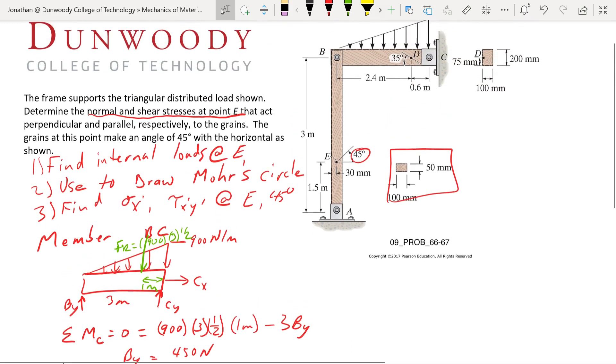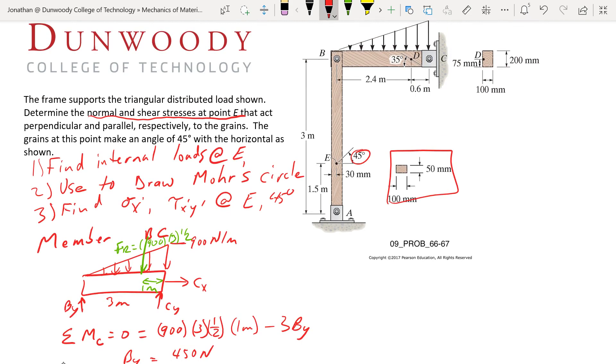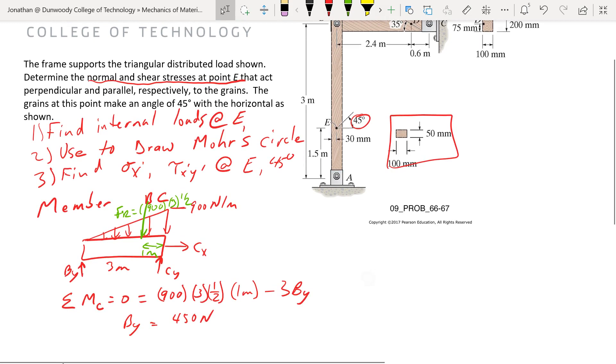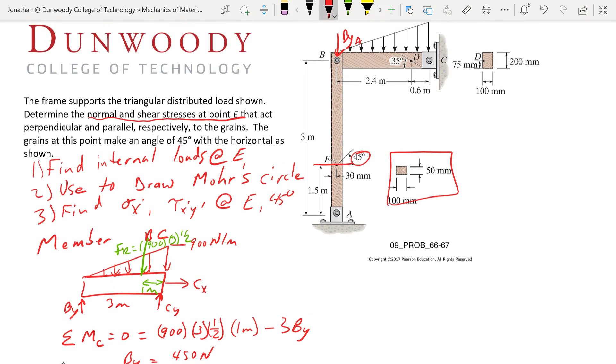So on member BC, my load is going up. That must mean that on member BA from this pin, I'm going to have a load going down on A. And that makes sense, right? That's where that force is coming from to support that load. So if I section this beam at, or the column at E, we're going to see that we have a normal force at E is negative 450 newtons. It's compressive.